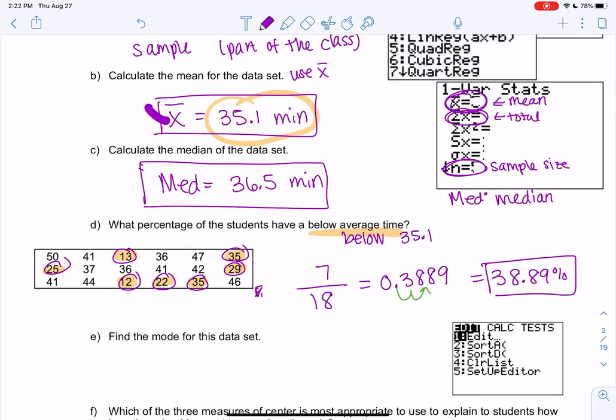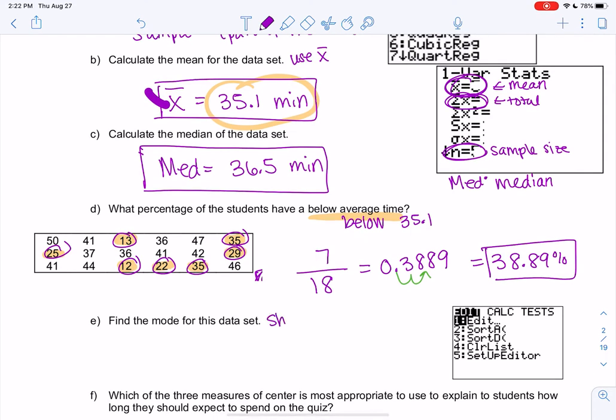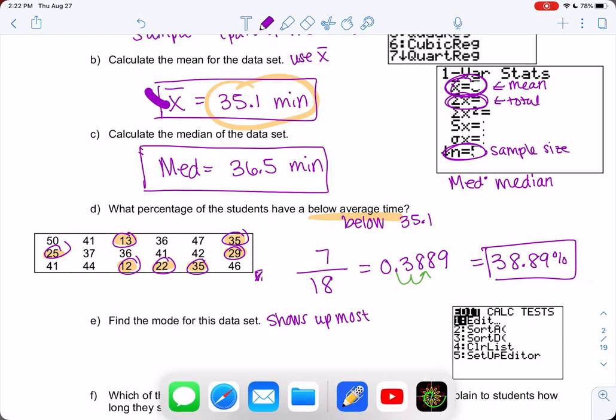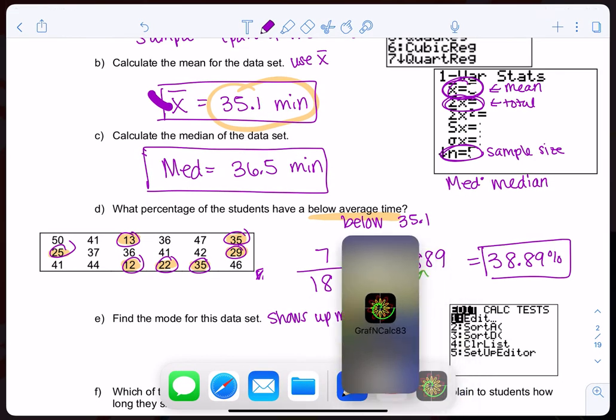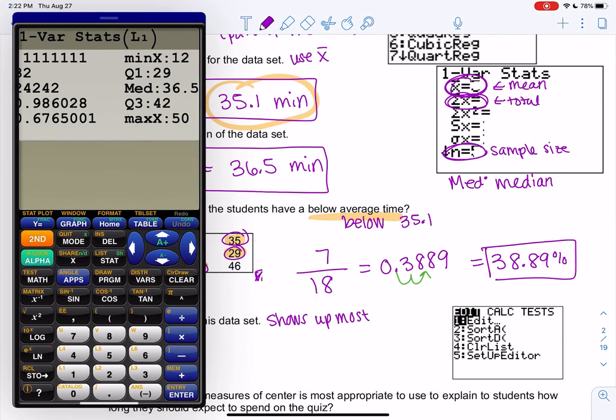And then the next option on the calculator is optional. The mode is the one that shows up the most. So you might be able to find it, but sometimes sorting the data makes it a little bit easier to see those repeats. So if you can find the mode from this table, go for it. But if you want to sort the data, sorting the data means putting it in order. It can make it a little bit easier to find the mode.